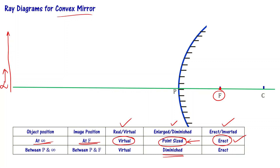Convex mirrors are used as rear-view mirrors in cars. A large car behind you appears small in your mirror, and a big building behind the mirror appears as a small image. This is the reason — wherever the object is, its image size is going to be diminished. If it is at infinity, the image size is going to be point-sized.